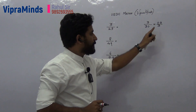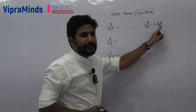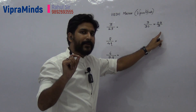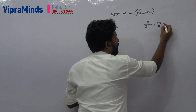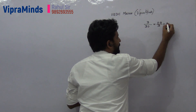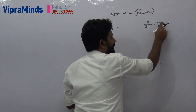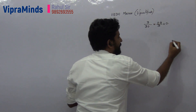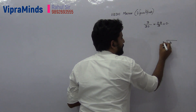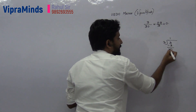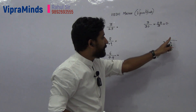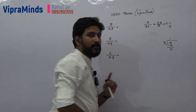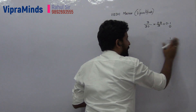Now divide 0.3 by 3 and write the answer in quotient and remainder form. So 0 divided by 3 is 0, then point. Then 3 divided by 3: 3 into 1 is 3, so remainder is 0. Quotient is 1, remainder is 0.